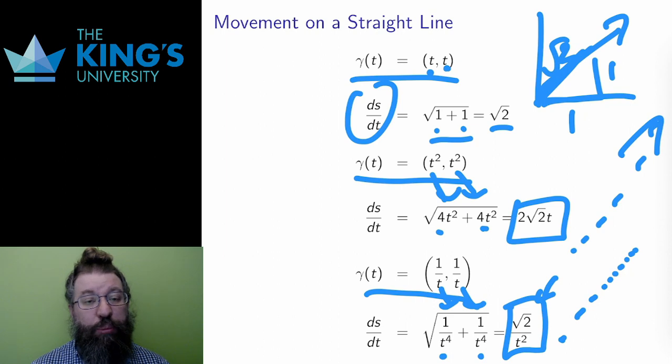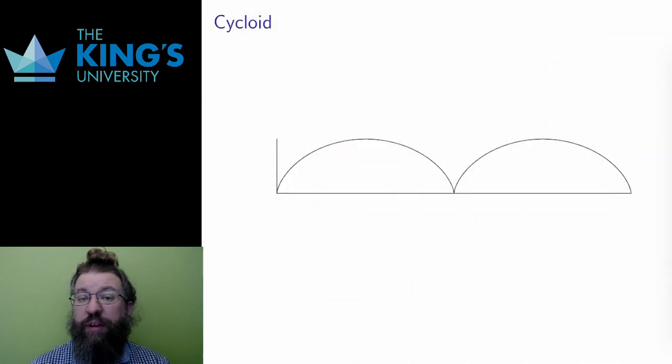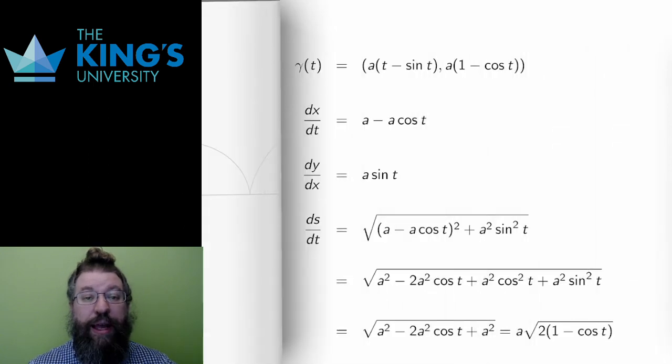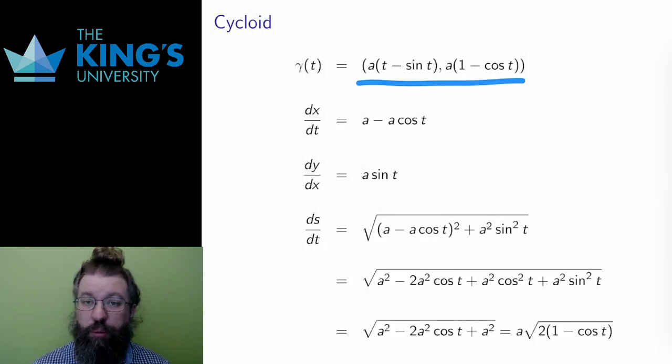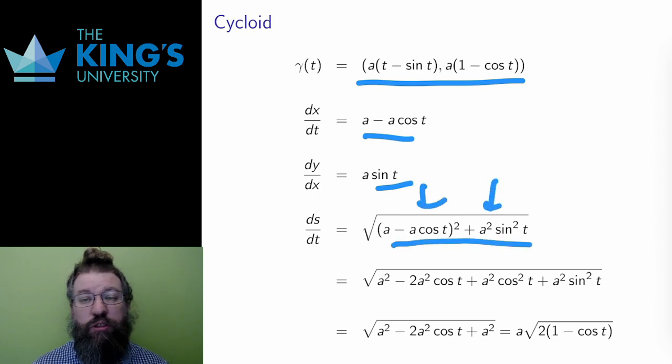The last example for speed is the cycloid. How fast is movement along this curve? Well, here is the algebraic description of the curve, and the two derivatives. I square both, add them together, take the square root, and then there is some simplifying algebra to do.